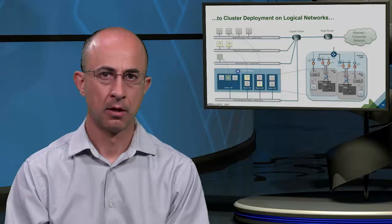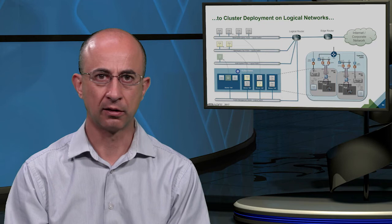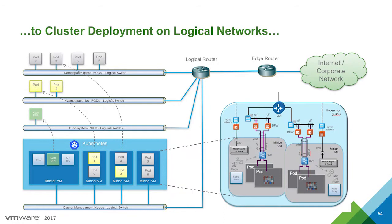Once physical gear and physical networking provisioning is complete, it's time to start priming the container-based orchestrators to deploy real-life applications. Our focus will now shift to a logical networking design. The diagram illustrated here relates to a Kubernetes environment, describing a possible approach to render a Kubernetes deployment on logical networks.